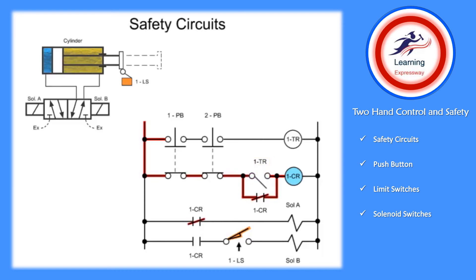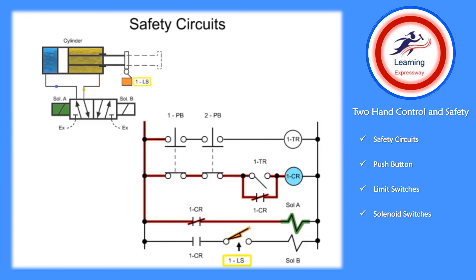With the control relay energized, power flows to solenoid A. Solenoid A shifts the valve to allow fluid into the blind end of the cylinder. The cylinder begins to extend the cam and releases limit switch 1, allowing it to close.